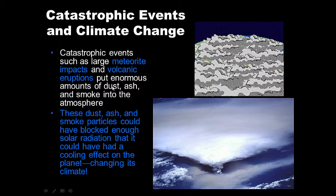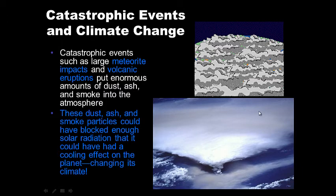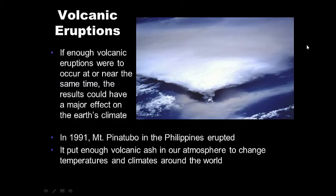These events put enormous amounts of dust, ash, and smoke into the upper atmosphere. This dust, ash, and smoke could block enough solar radiation to have a cooling effect on the planet, ultimately changing its climate. This is the eruption of Mount Pinatubo, seen from space. This one single volcanic eruption altered Earth's climate for about a year. If enough volcanic eruptions were to occur at or near the same time, the results could have a major cooling effect on Earth's climate.